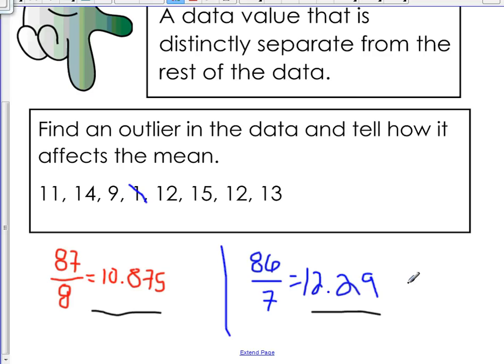So the 12.29 is probably a better representation of the data up here because it seems like it's more in tune with the 11, 14, 9, 12, 15, 12, and 13. The 10.875 seems a little low if you think about it logically. Alright, so outliers can make a big difference.